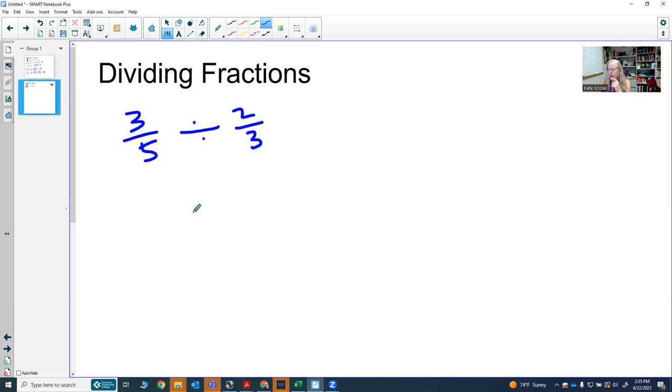Looking at this way, you got to think about what this division symbol means and actually what all these lines mean. All the fraction lines mean is really a division. So this division sign can actually be written as a fraction sign. So we could rewrite this as three-fifths divided by two-thirds as a fraction.